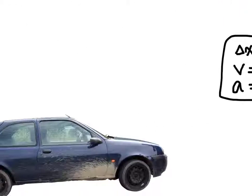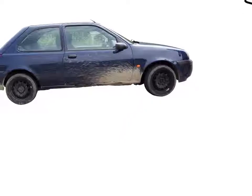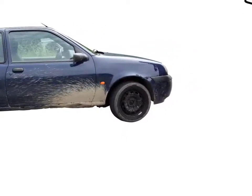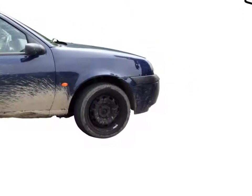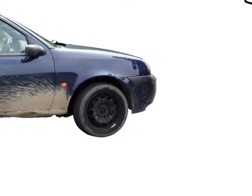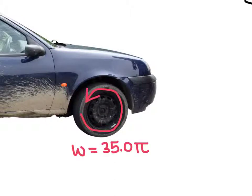So let's try converting here with a problem. So this vehicle, if we knew how quickly the tire was spinning, or in other words, its angular velocity, let's just say that it was spinning with an angular velocity of 35 pi radians.